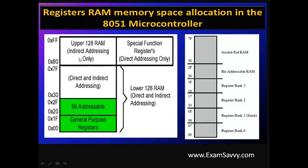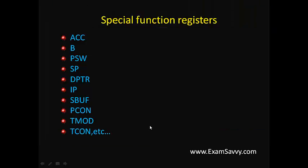The upper area from 80 to FF is also called Special Function Registers. The memory from 80 to FF supports only direct addressing mode and is called Special Function Registers. This is the memory allocation done for registers in the 8051 microcontroller. Finally, we will see the Special Function Registers in 8051.